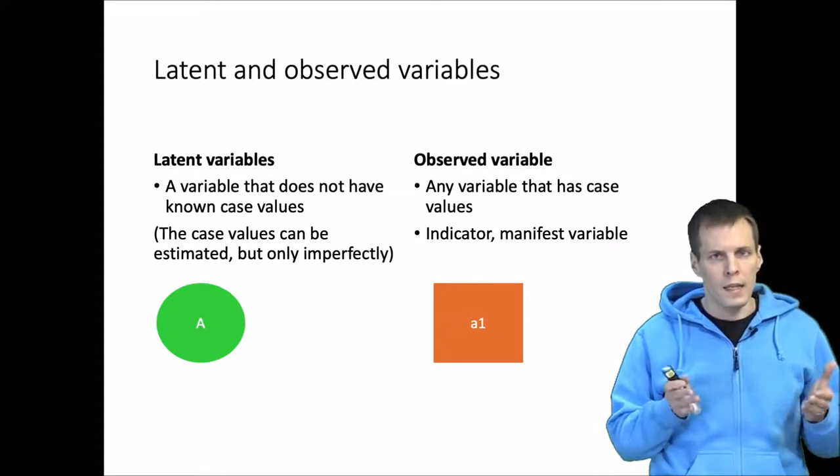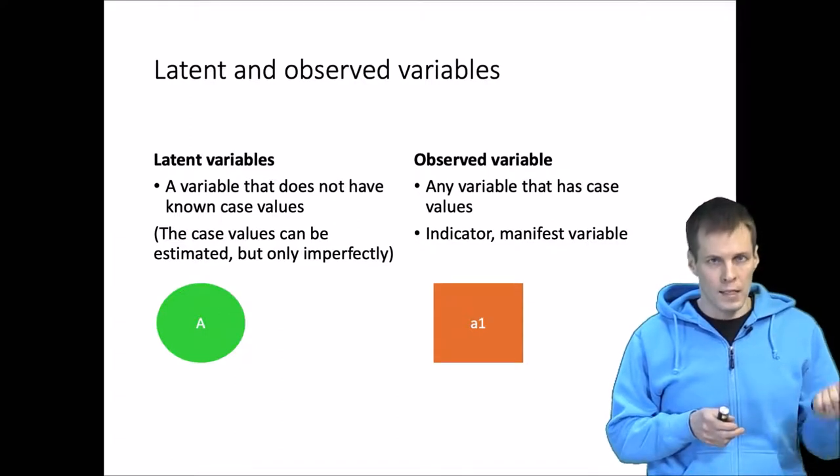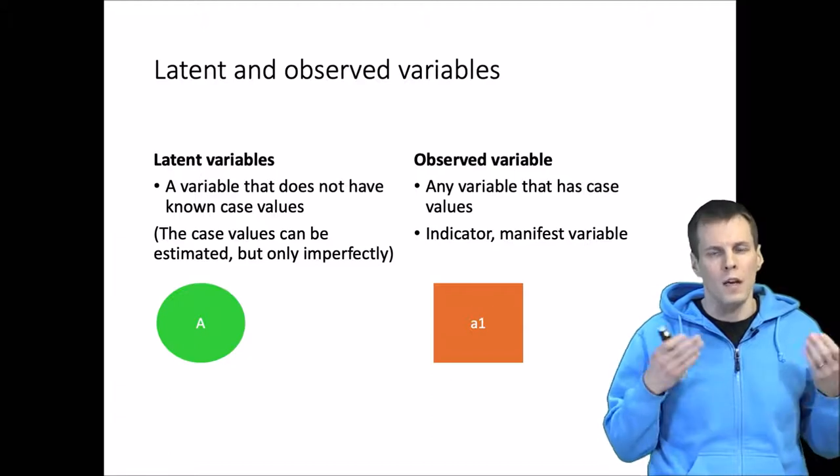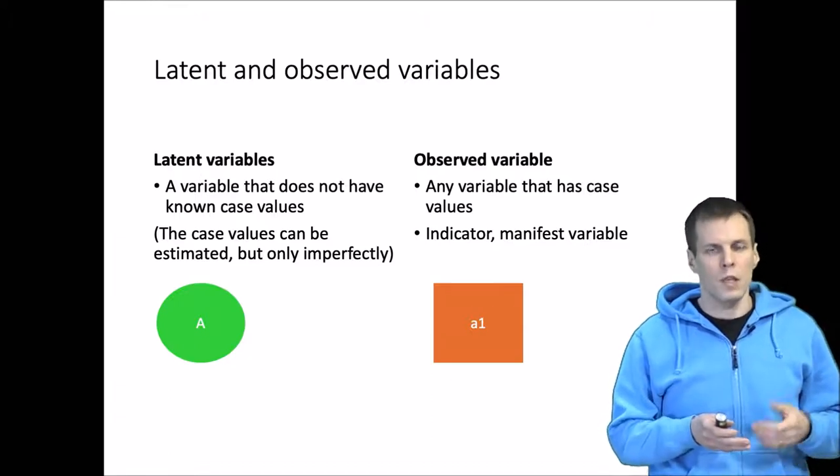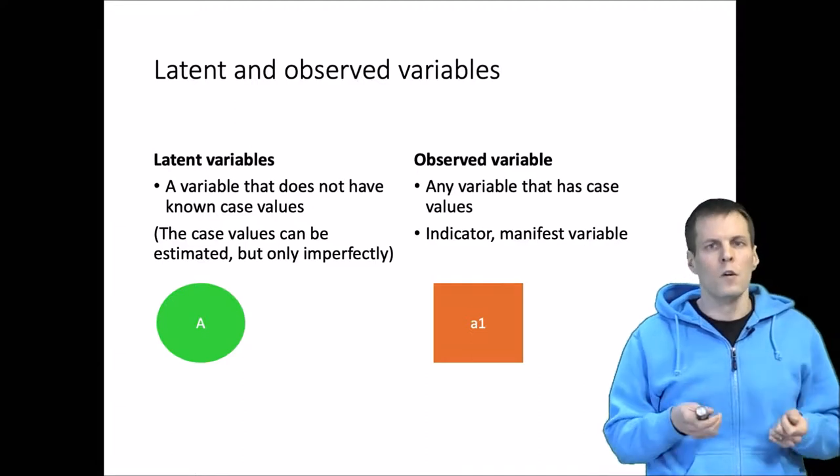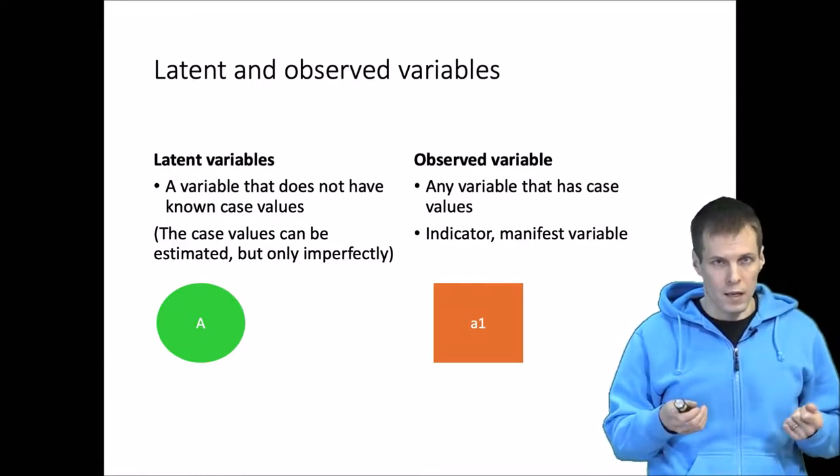With latent variables, we assume that the variable exists but we don't have data for it. For example, if we study intelligence, we assume that intelligence exists, but we don't have data for intelligence—we have data for some imperfect measures of intelligence.